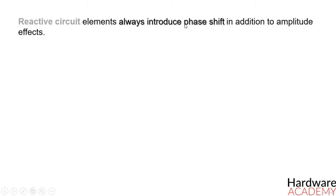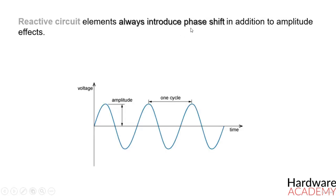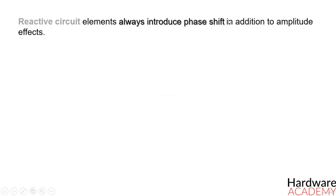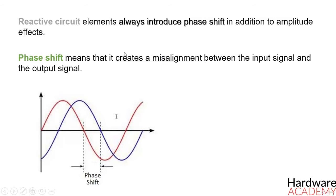The concept of phase refers to the value of a periodic signal at a specific moment within a cycle. As a result, when we say that a circuit causes phase shift, we mean that it creates a misalignment between the input signal and the output signal. The input and output signals no longer begin and end their cycles at the same moment in time.